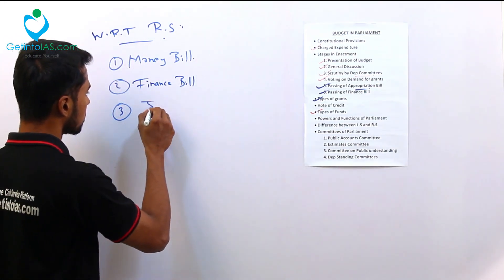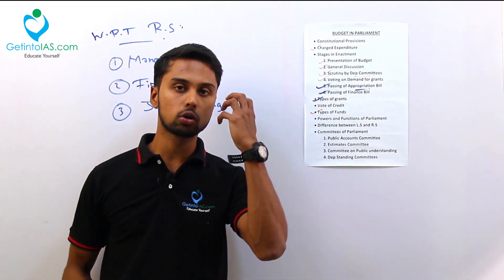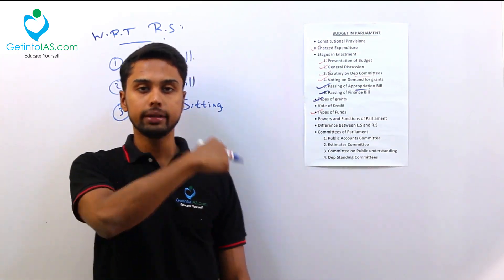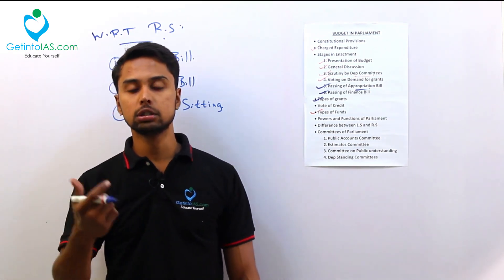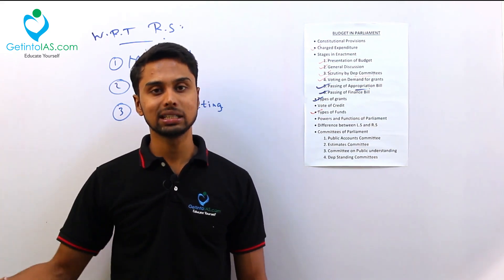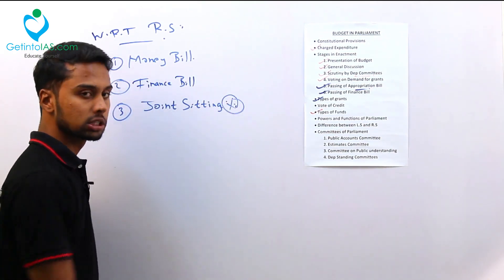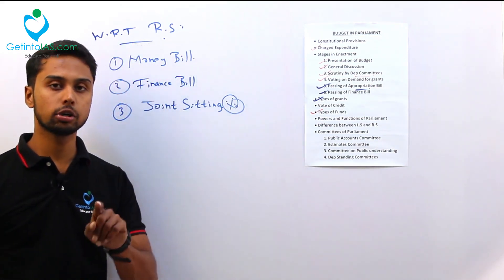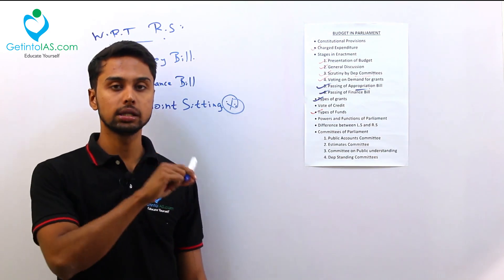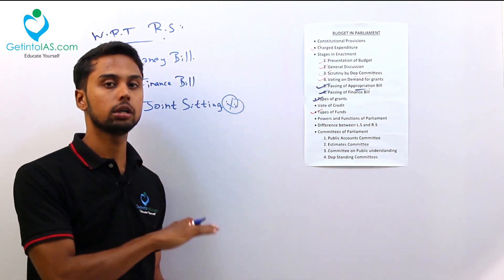Next is joint sitting. Joint sitting means both members of Lok Sabha and Rajya Sabha sit in the same house. Joint sitting happens during a deadlock — when Lok Sabha passes a bill and Rajya Sabha is not happy with the amendments and does not pass it. This applies to ordinary bills only; there is no joint sitting for money bills. Joint sitting is presided by the Speaker of Lok Sabha, not the Chairman of Rajya Sabha. So in this term also, Rajya Sabha is not having that much power.